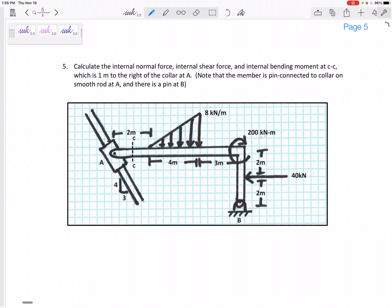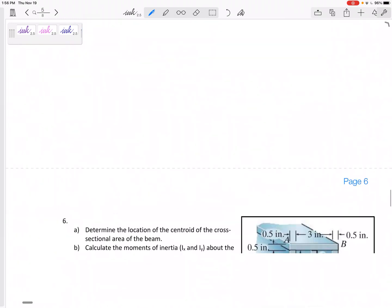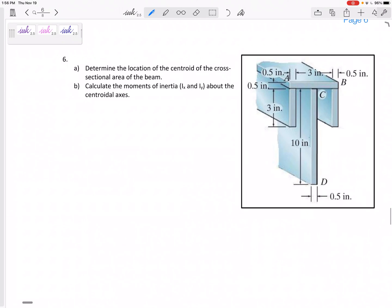Number six will be kind of a double problem: both first find the centroid and then find the moment of inertia. Find the centroid and then find the moments of inertia about the x and the y centroidal axes. So first you've got to find the centroid and then find the moment of inertia about the centroidal axes.